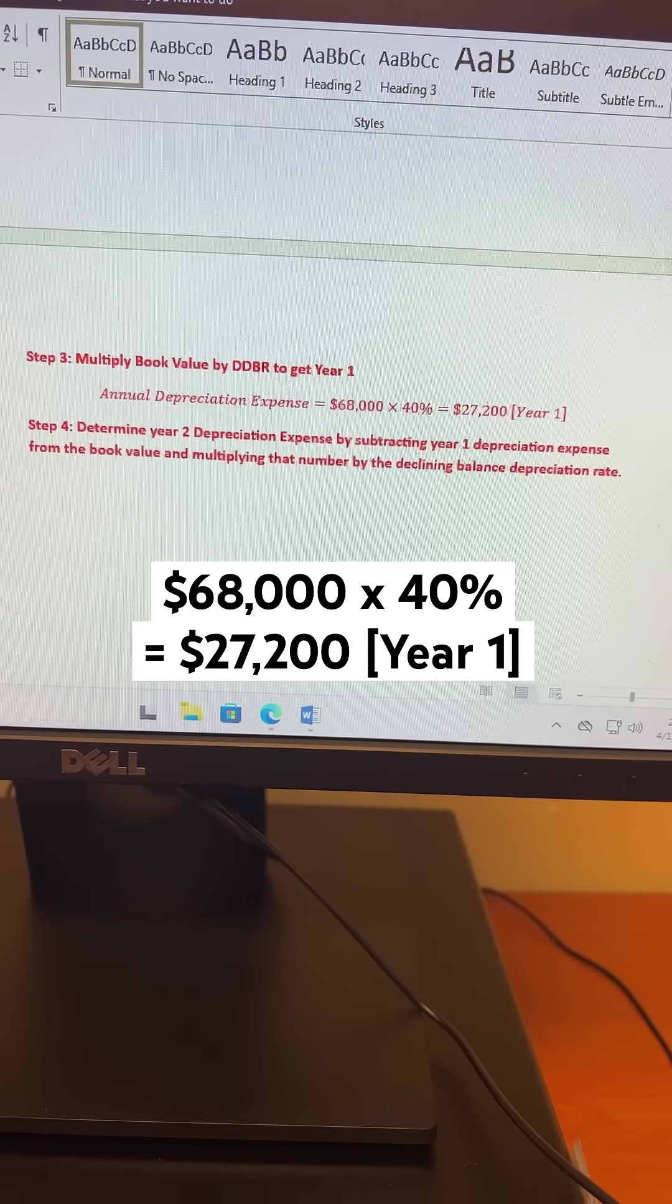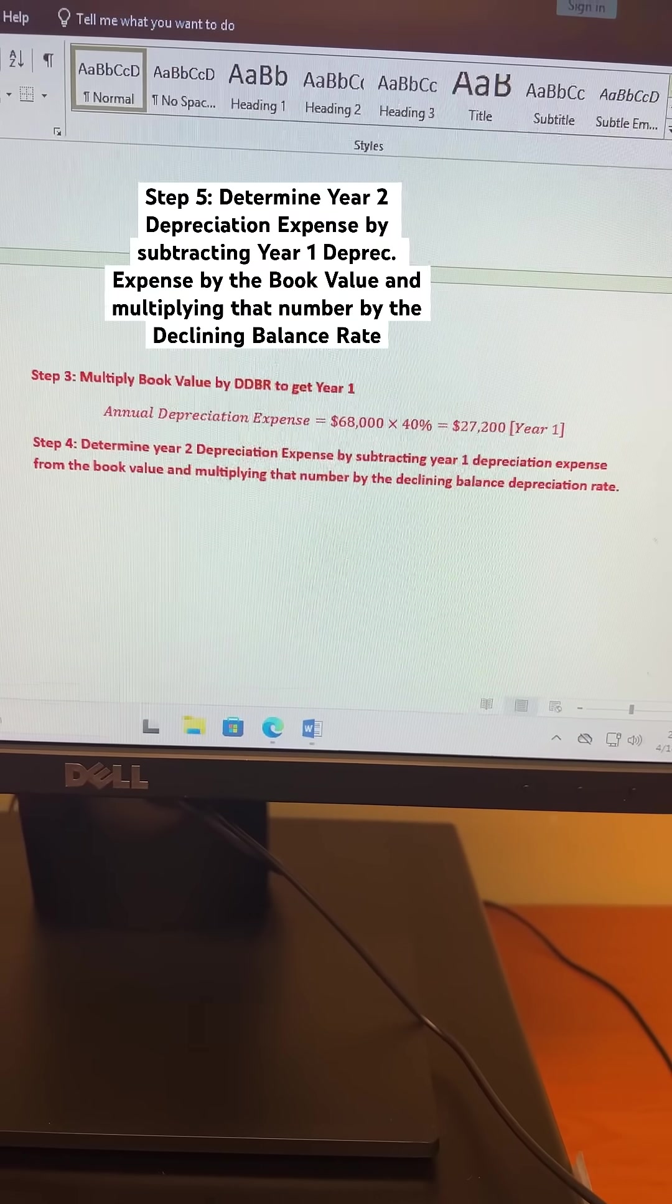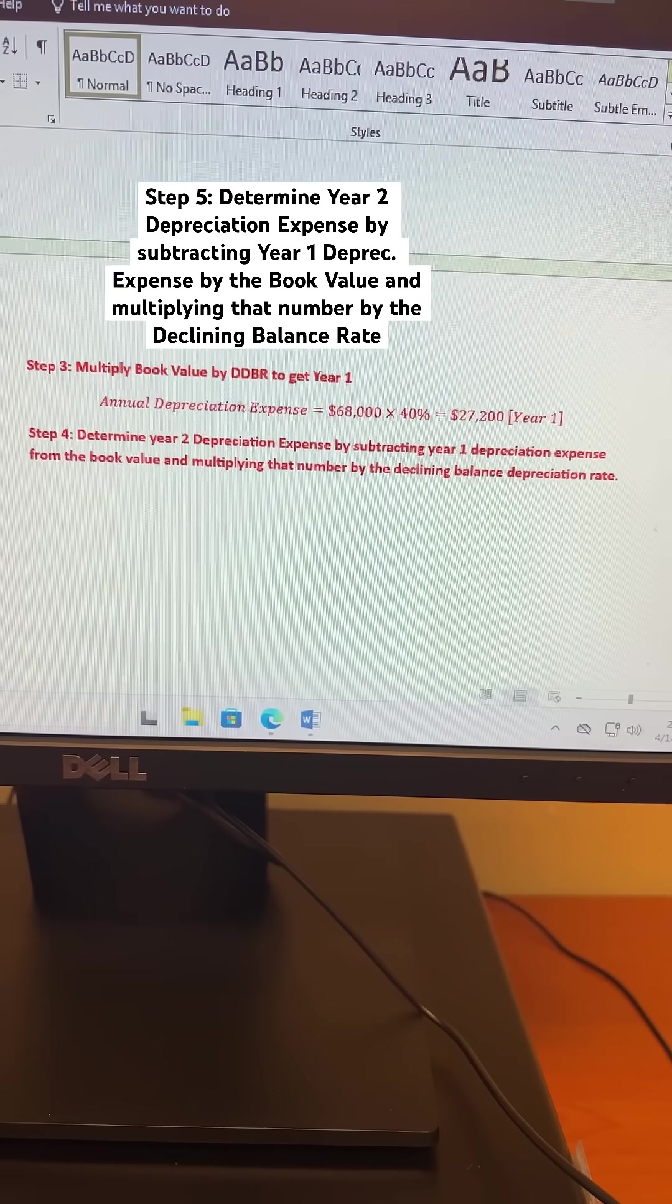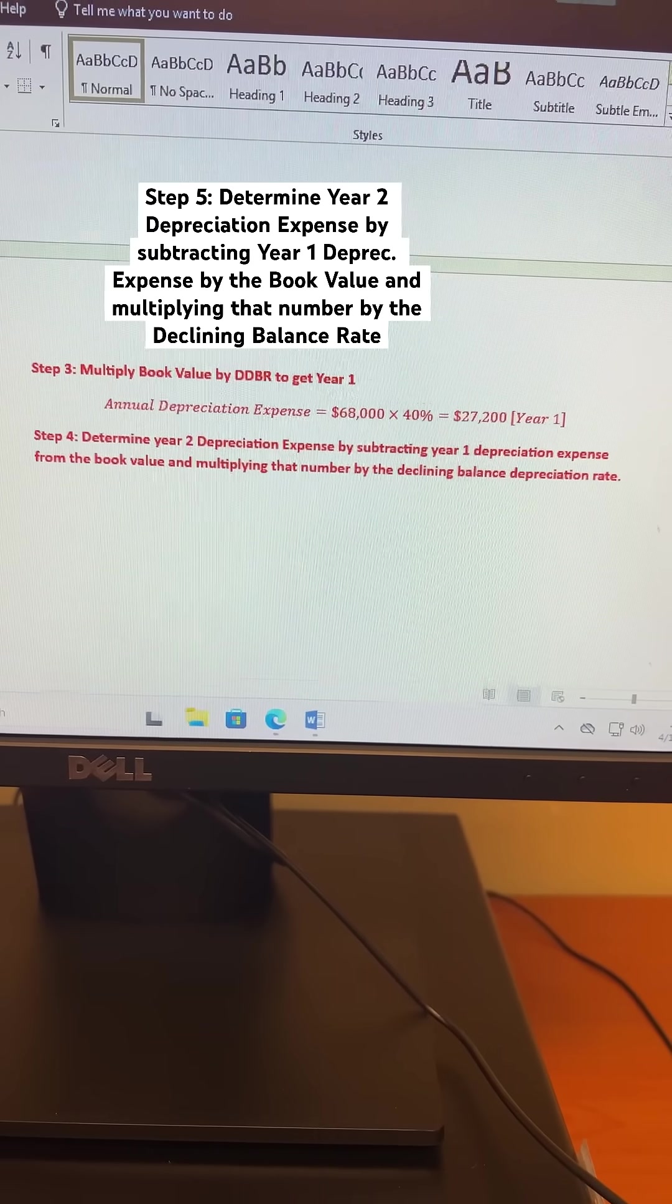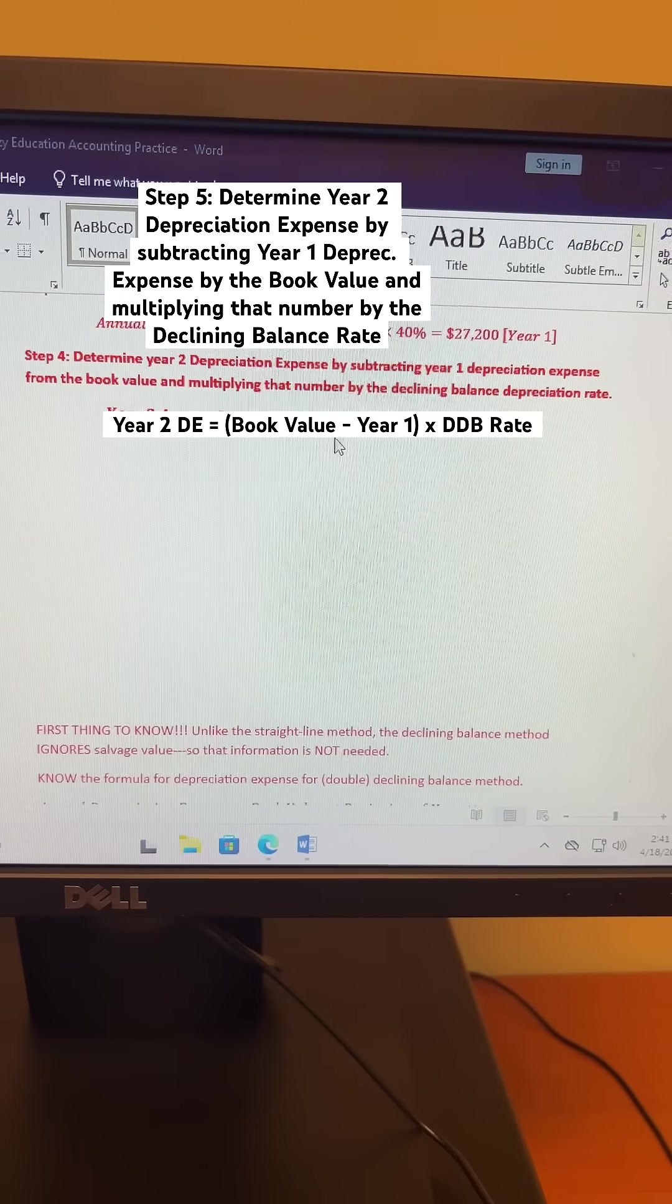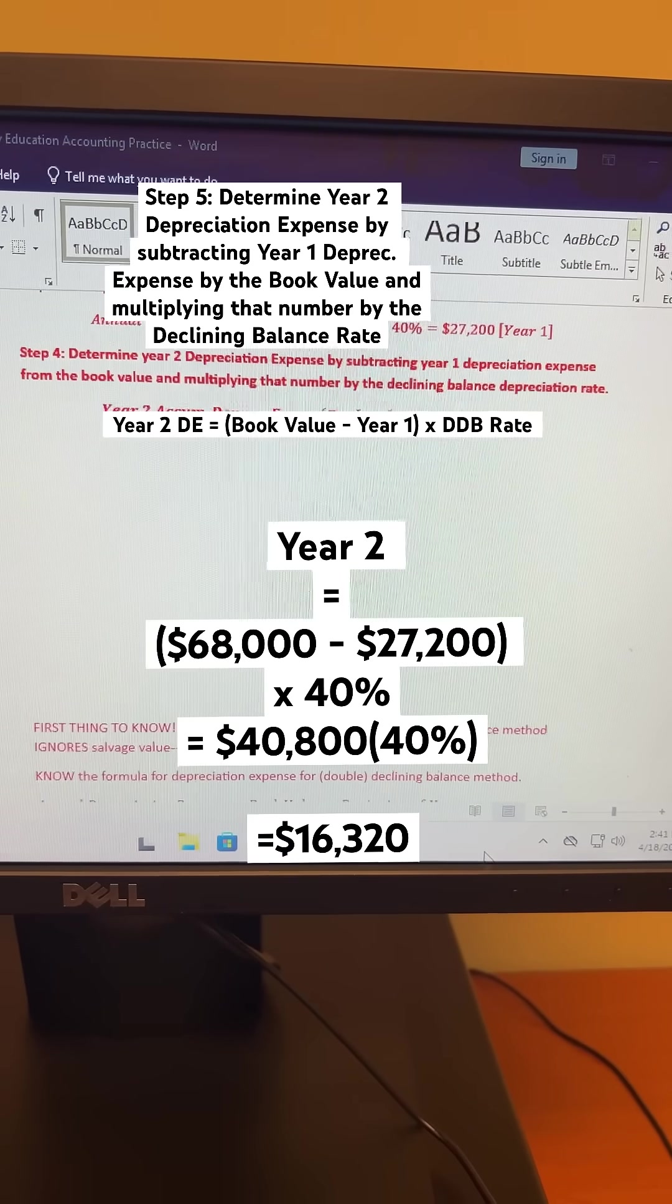Step 5 is to determine your year 2 depreciation expense by subtracting year 1 depreciation expense from the book value and multiplying that number by the declining-balance depreciation rate. I know it sounds complicated, but it's just the book value minus year 1 times declining-balance rate, and that will give you year 2.